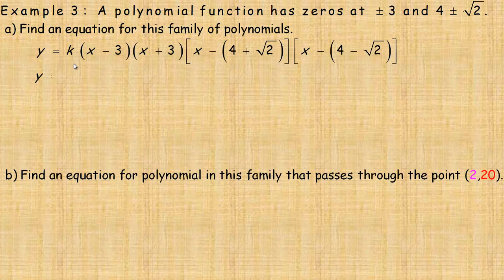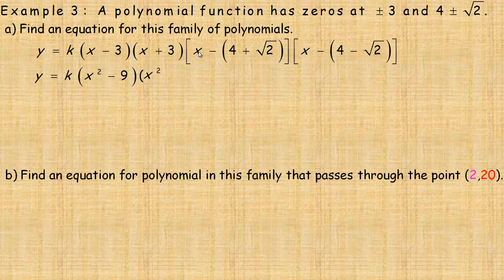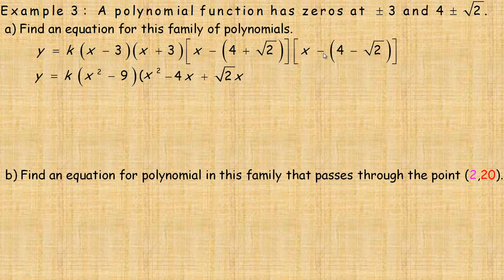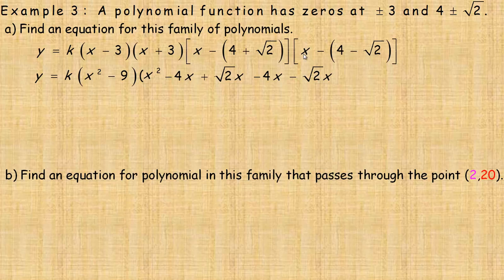Let's expand this out. (x minus 3)(x plus 3) gives x squared minus 9. For the other two factors, multiplying the two binomials: x times x is x squared. Then x times negative (4 plus root 2) gives negative 4x plus root 2 times x. And multiplying negative (4 minus root 2) by x gives negative 4x minus root 2 times x.